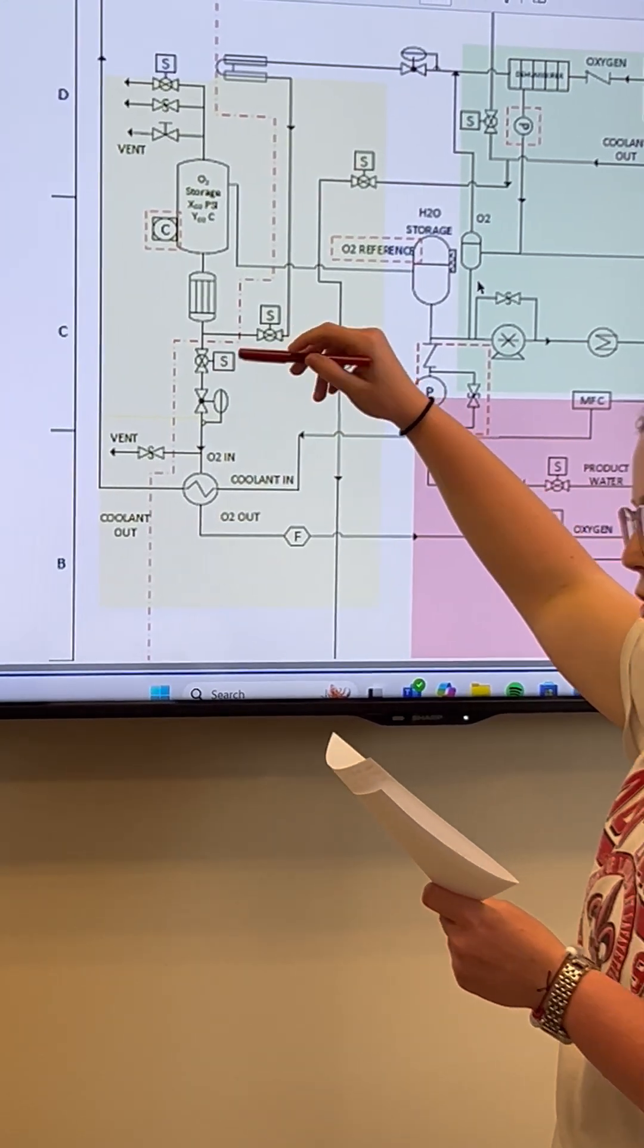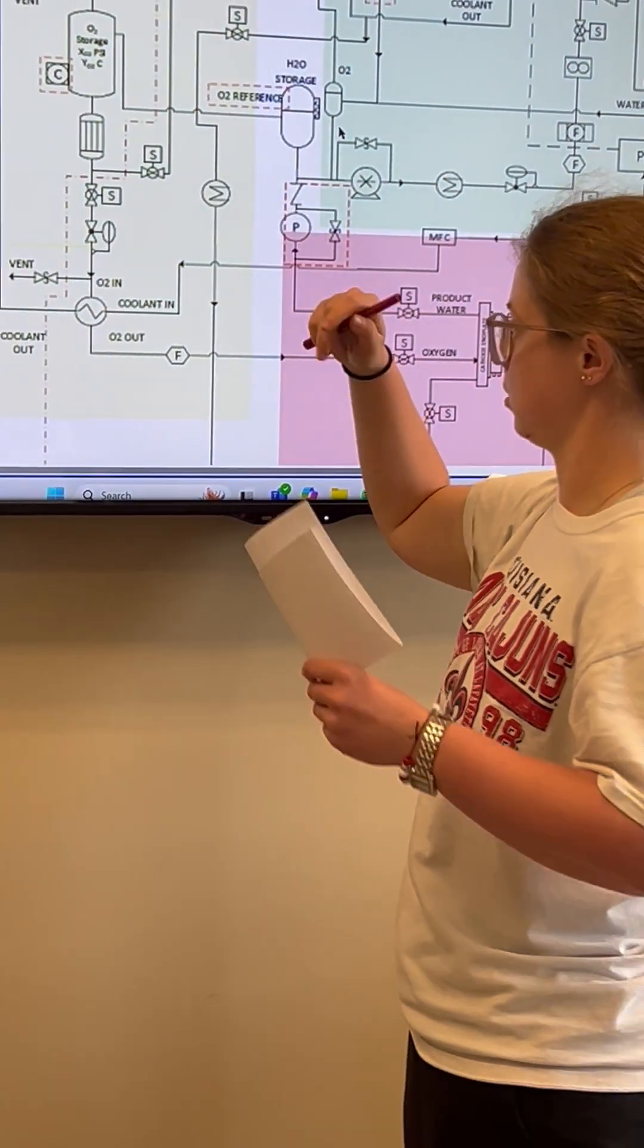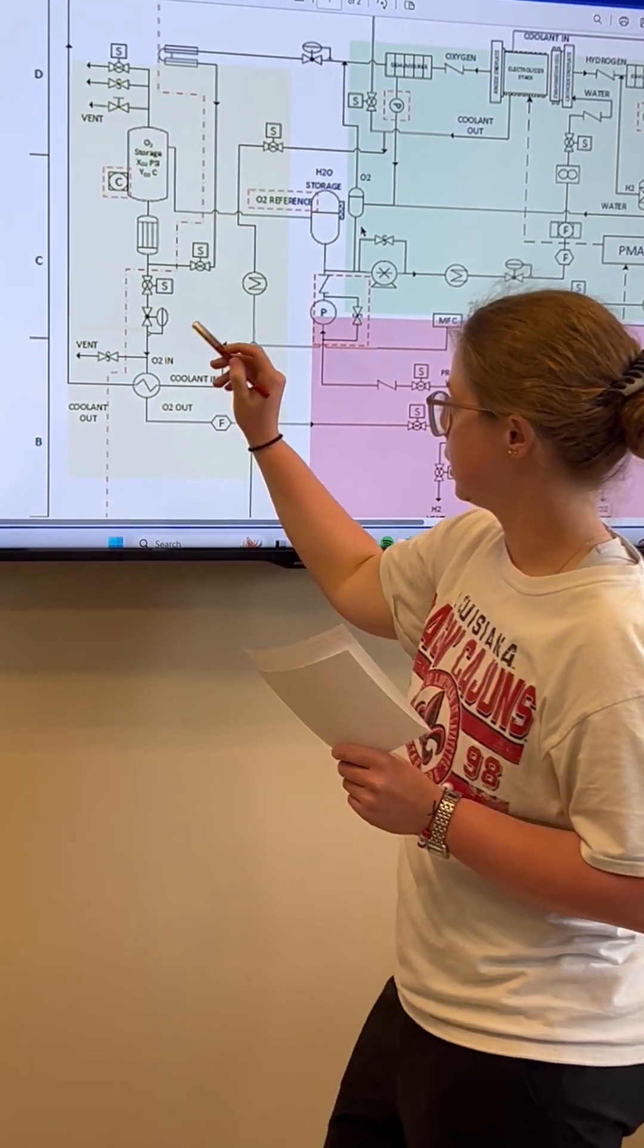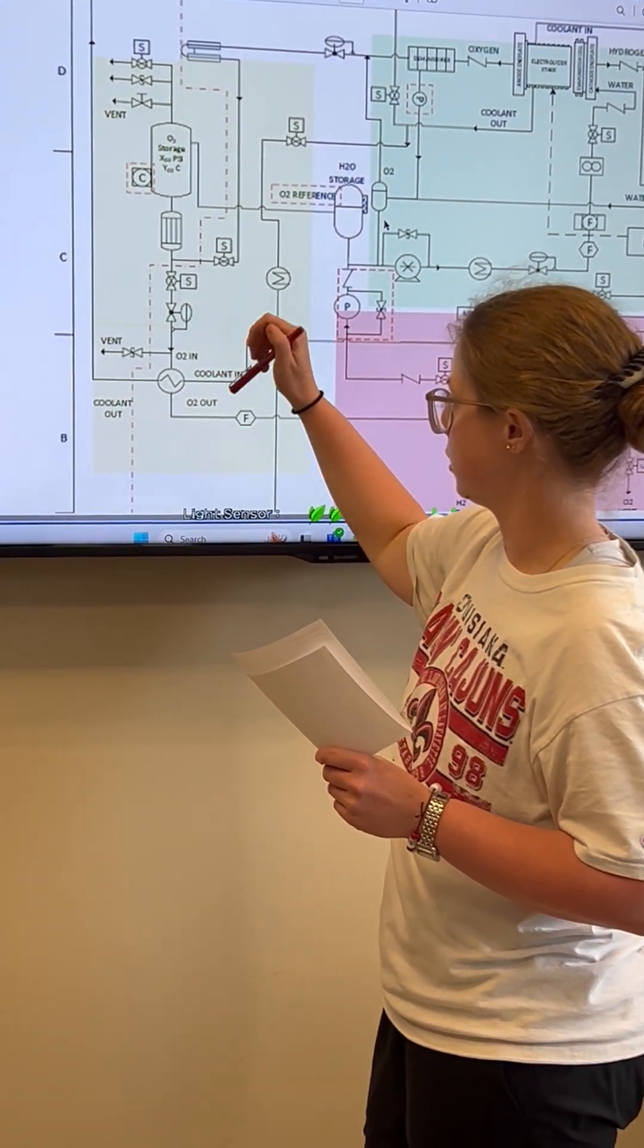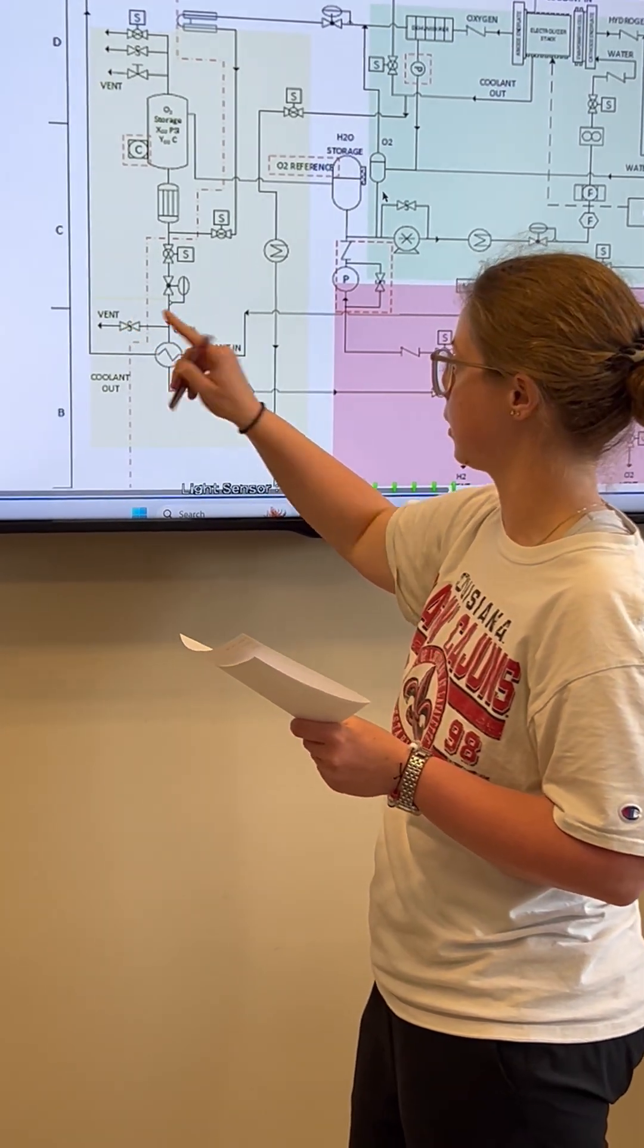This goes to a forward pressure regulator, which regulates the pressure as we go forward. Once we reach the regulator, we branch. We can either vent out through this relief valve